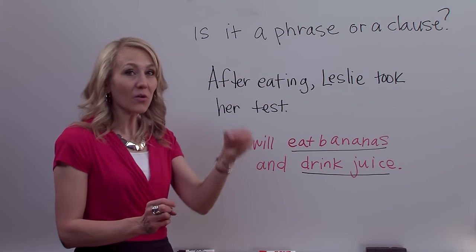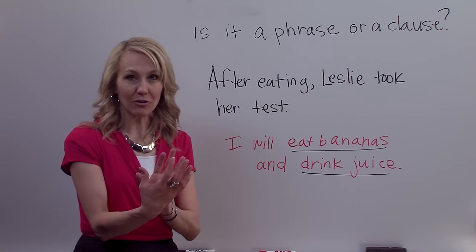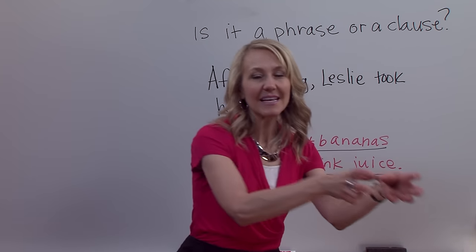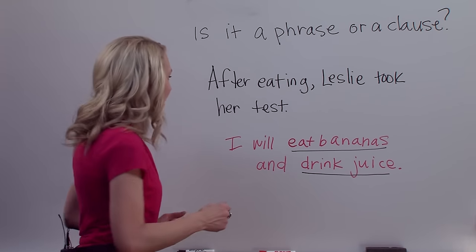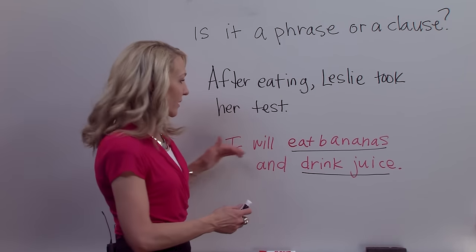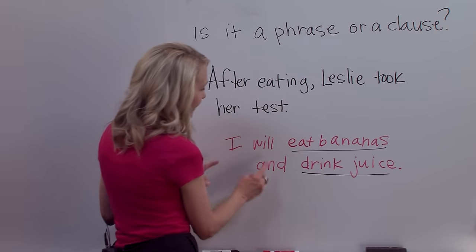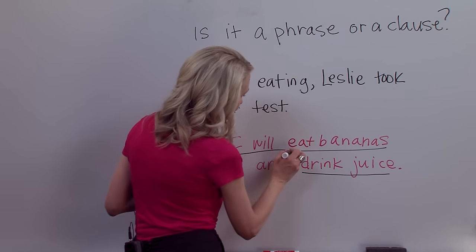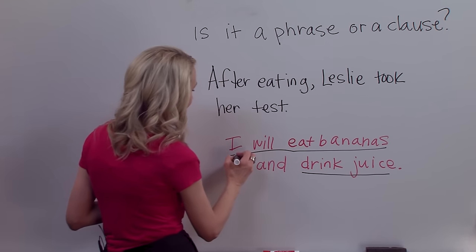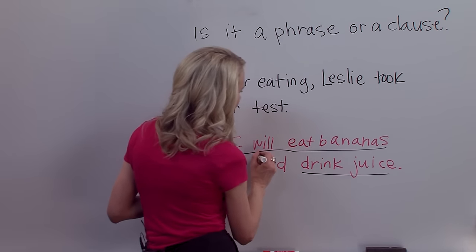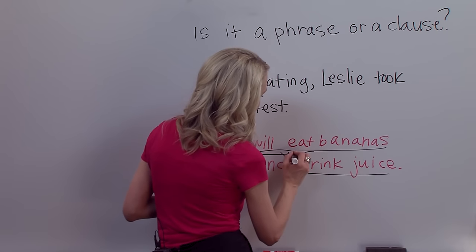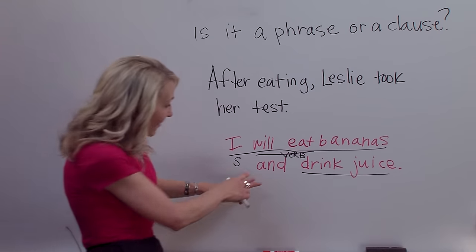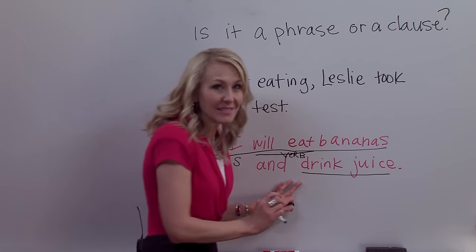When you have both a subject and a verb, then you're dealing with a clause. To illustrate: in the red on the board I have 'I will eat bananas and drink juice.' Here I have two verb phrases connected by the coordinating conjunction 'and.' The first part — 'I will eat bananas' — is actually a clause because it has a subject and a verb.